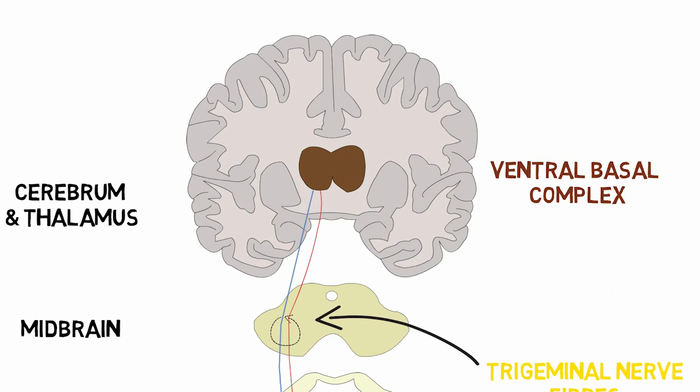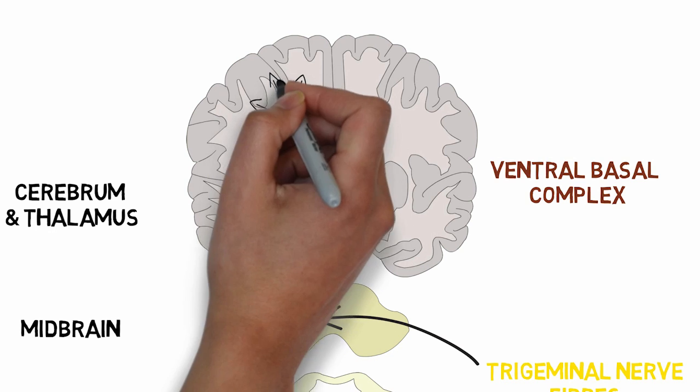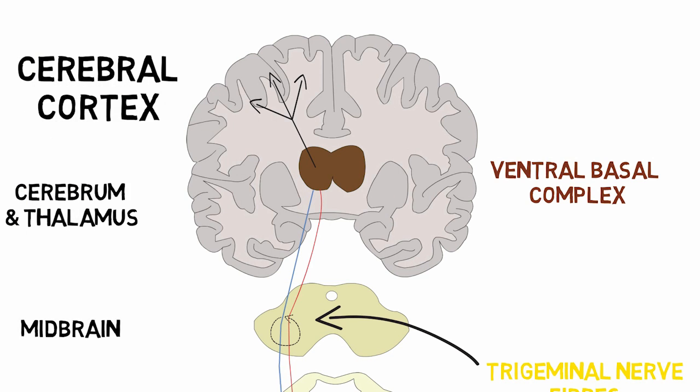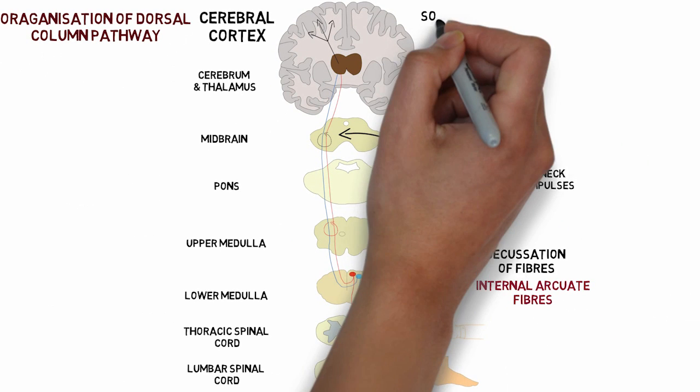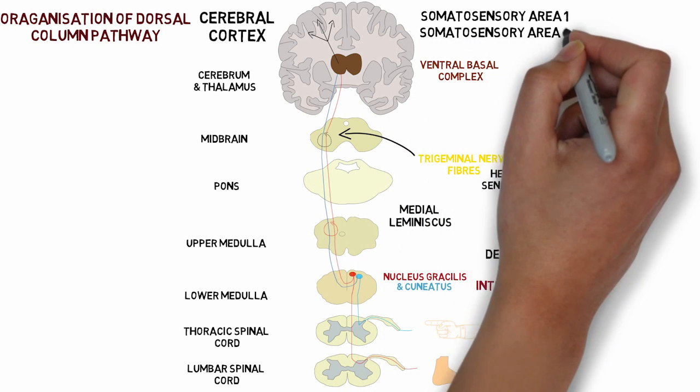In the thalamus, these second order neurons relay in the ventral basal complex, and from here the third order neurons arise which project into multiple areas of the cerebral cortex, mainly the somatosensory area 1, also known as the post central gyrus, and also the somatosensory area 2, which is known as the lateral parietal cortex.